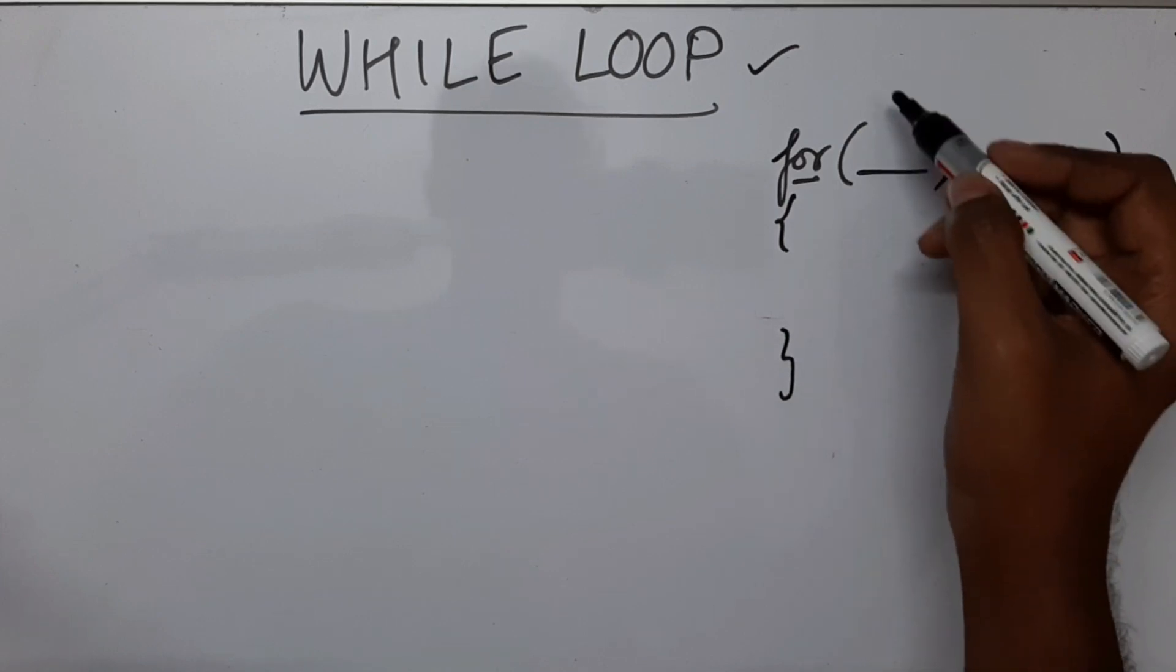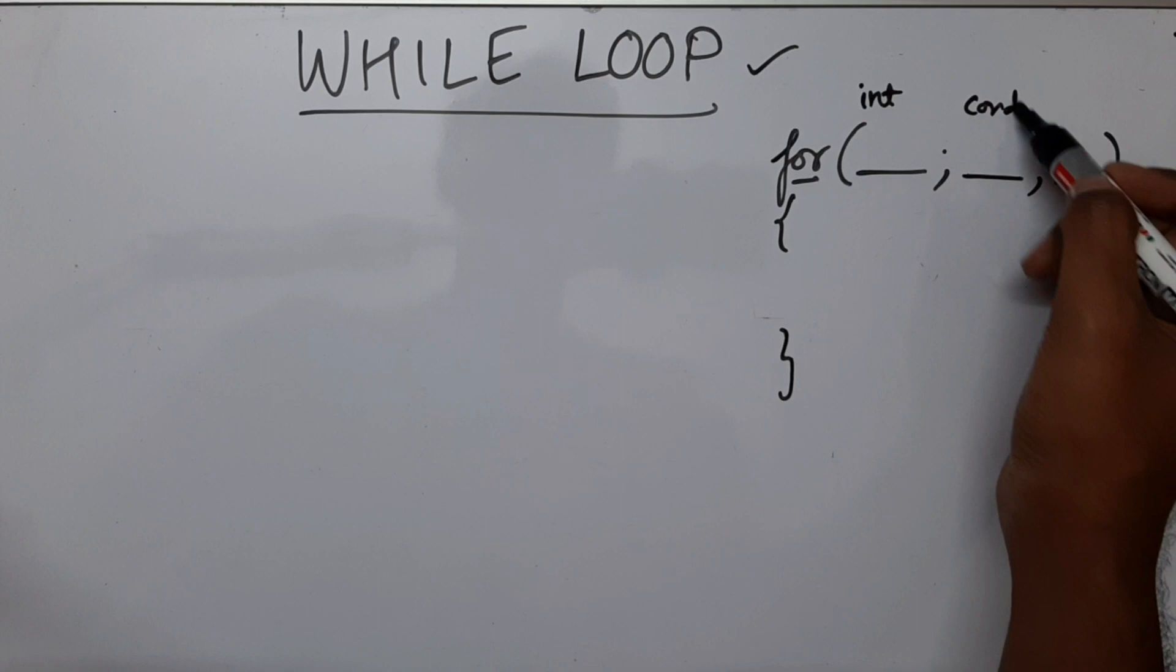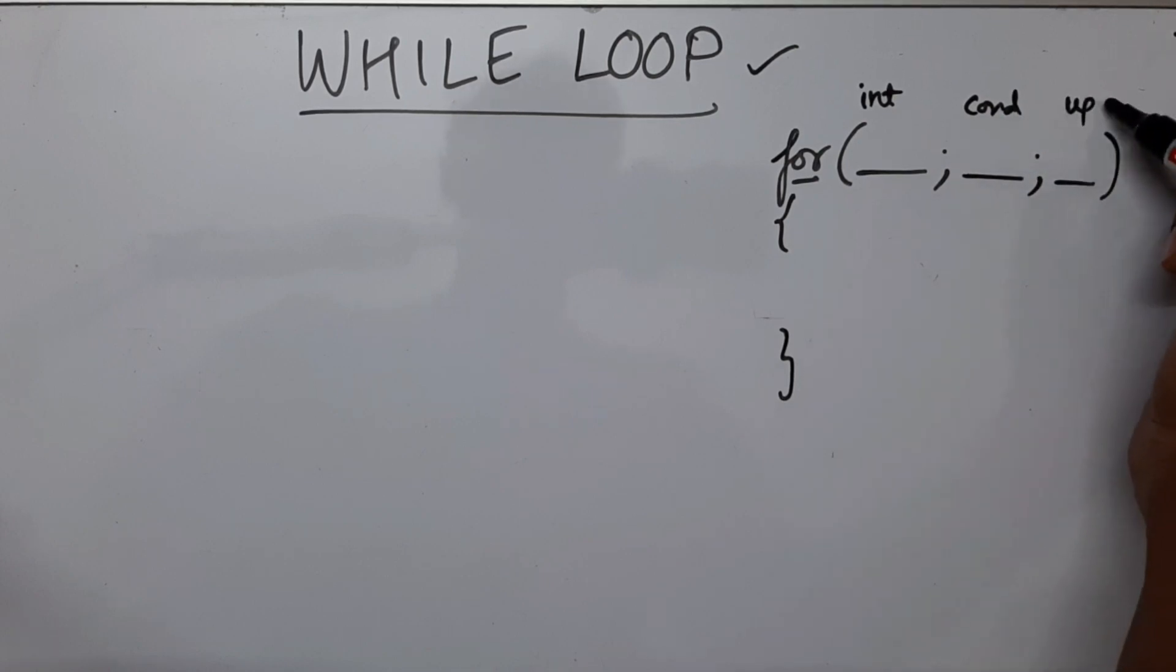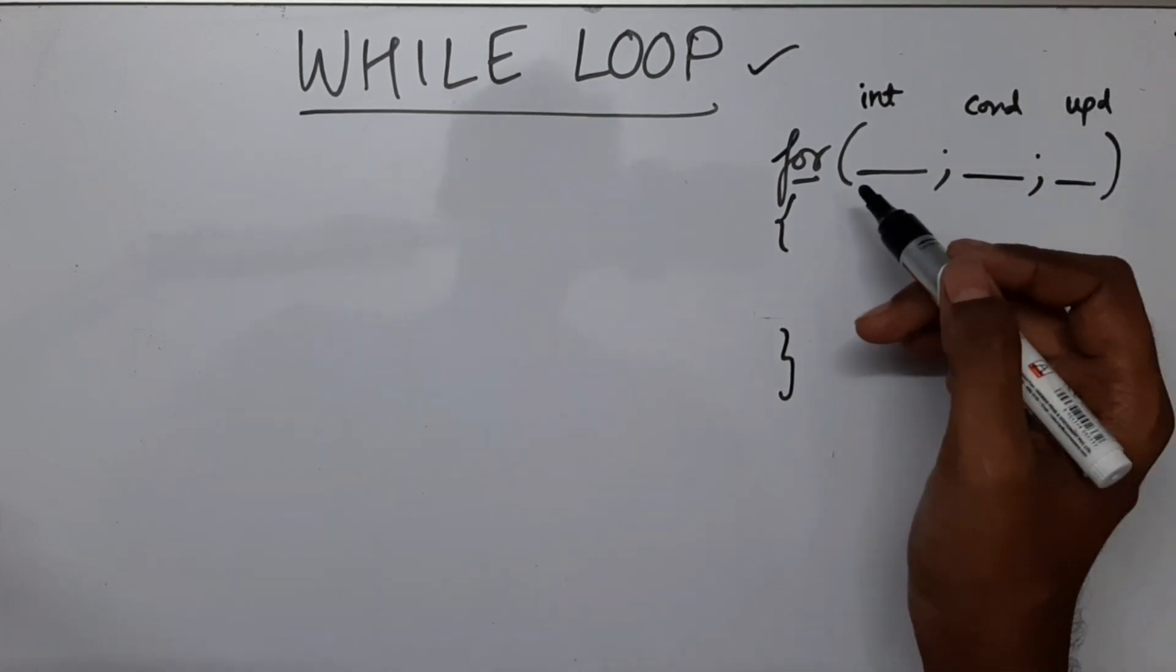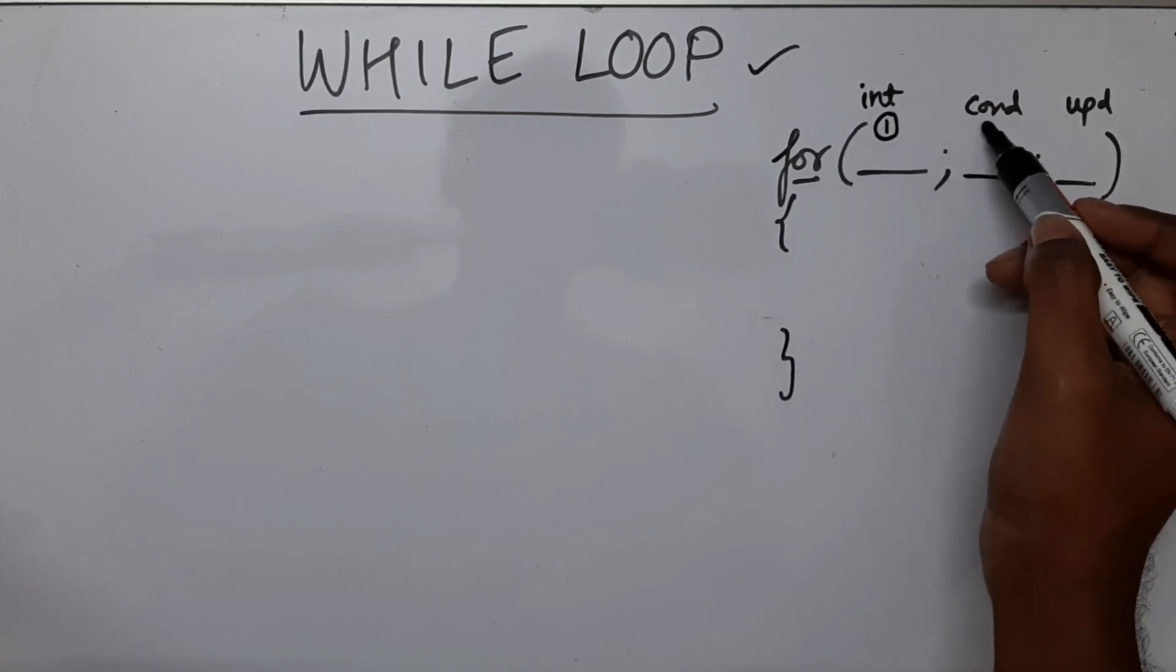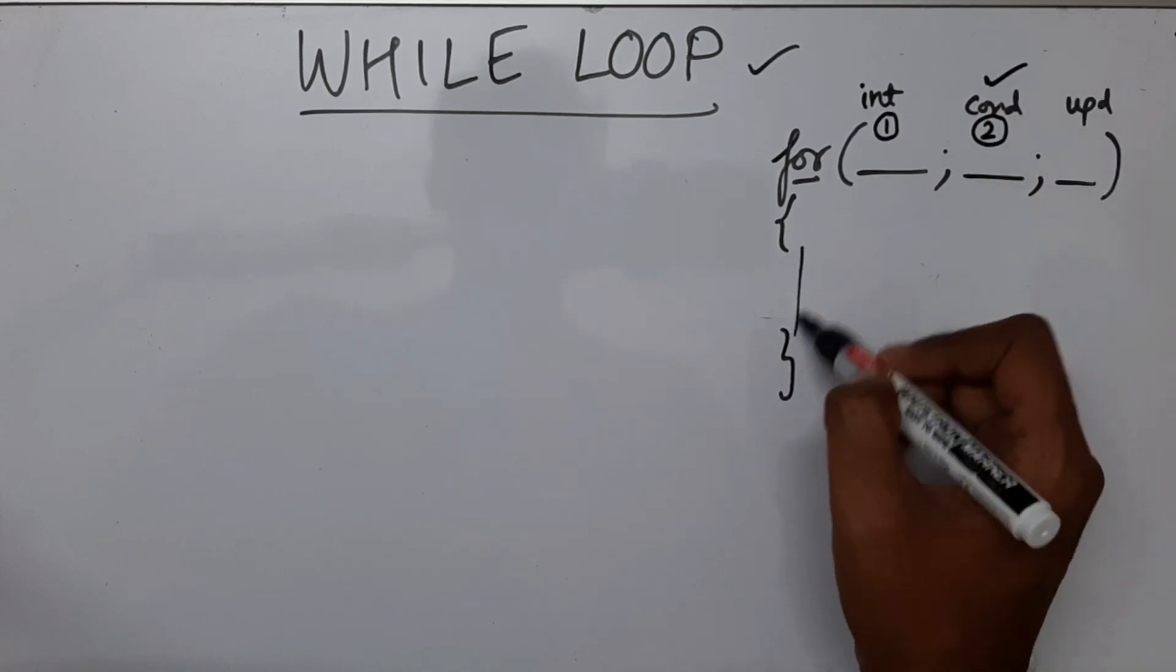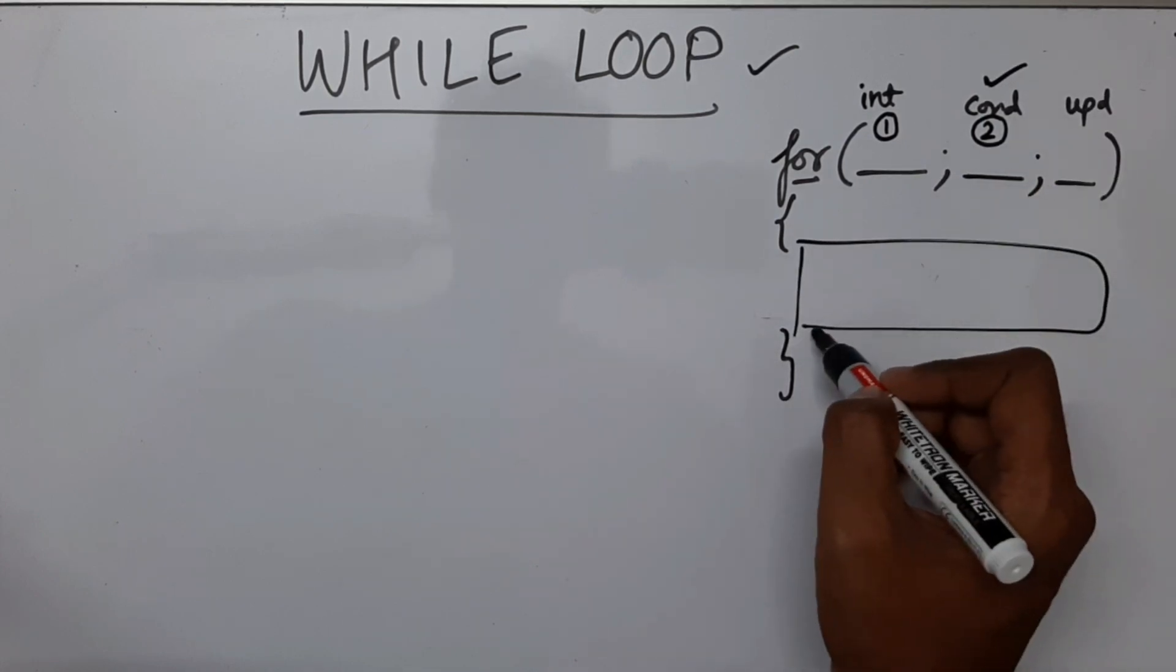So this is initialization, this is condition, this was updation. So the order of execution was first the initialization takes place, then the condition was checked. Once the condition is true, we go inside the body and execute whatever is inside the body.